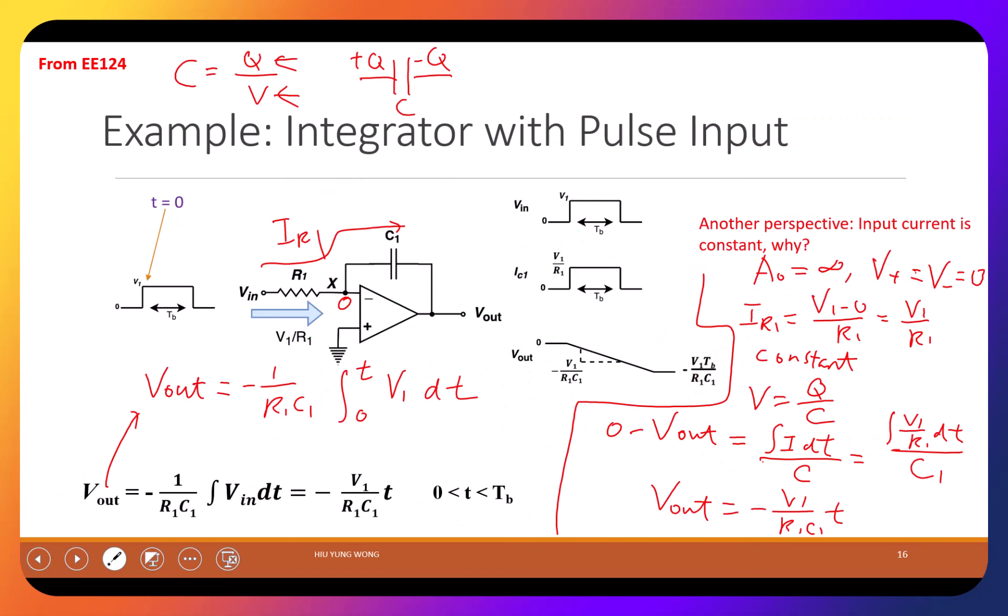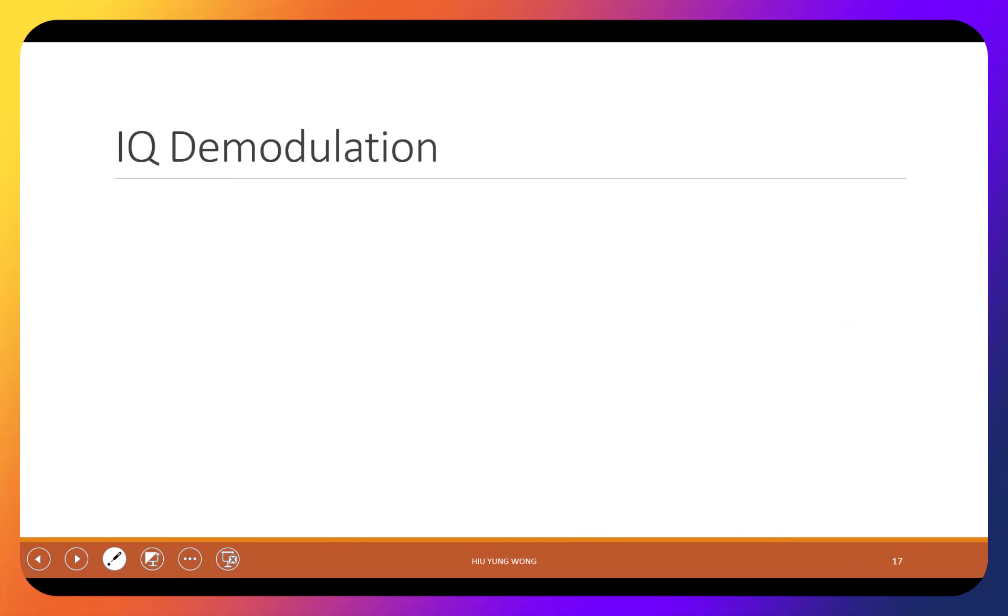Here's an example of the integrator. I don't require you to review this. I'm not going to test anything regarding IQ demodulation, but you guys pay attention still. I mean, just for your further information, we can use the op amp to create the integration. The integration in the frequency domain is 1 over s.